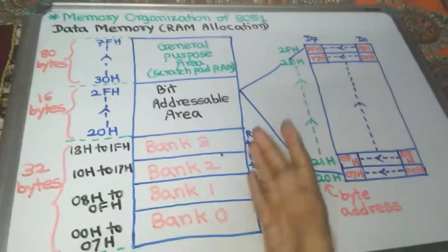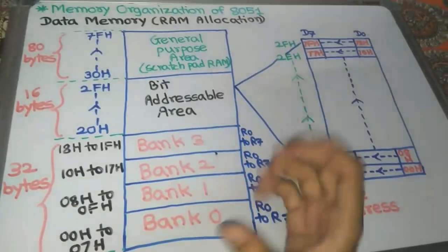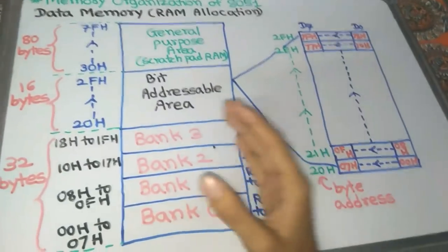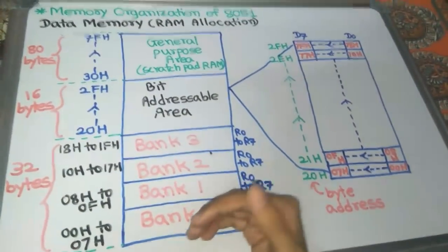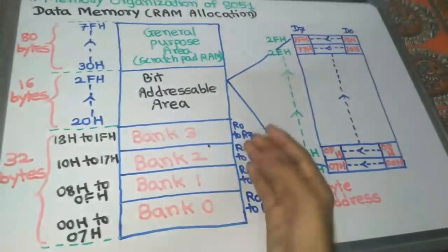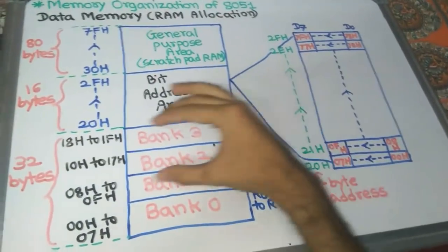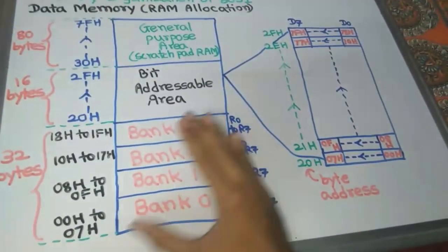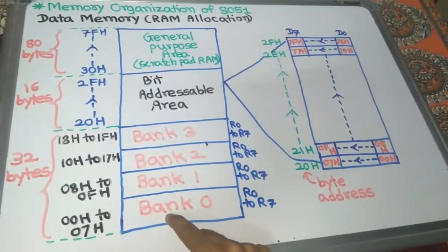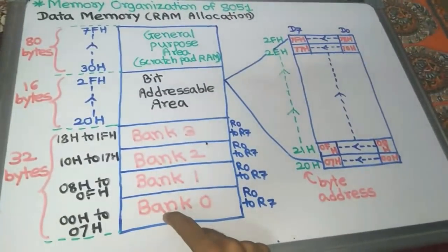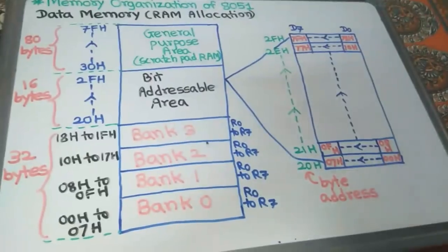At a time, only one bank is selected with the help of RS1 and RS0 flags of the PSW. The user provides bits 00, 01, 10, or 11 to select Bank 0, 1, 2, or 3. If a bank is not selected, it can be used as general memory bytes. The default bank is Bank 0. These register bank registers are byte addressable and can also be used as a stack area. If the stack area becomes full, the overflow data can be stored in the general purpose scratchpad RAM.